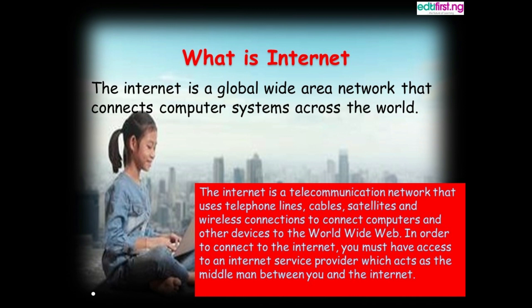What is internet? The internet is a global wide area network that connects computer systems across the world. The internet is a telecommunication network that uses telephone lines, cable, satellite, and wireless connections to connect computers and other devices to the World Wide Web. In order to connect to the internet, you must have access to an internet service provider, which acts as the middleman between you and the internet.